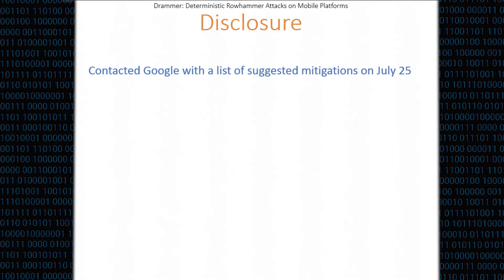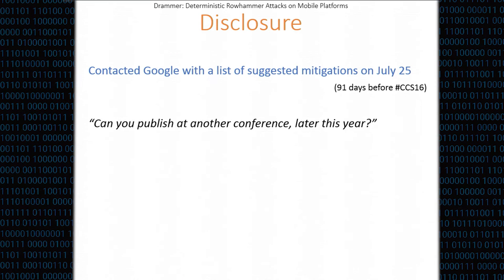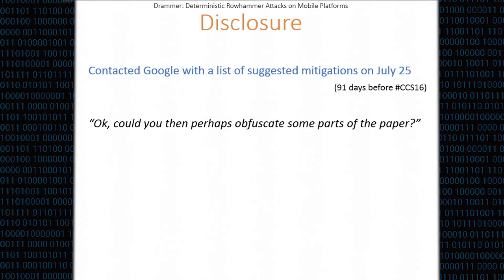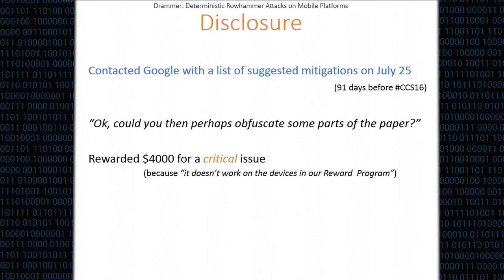We had some disclosure. We contacted Google with a list of suggested mitigations on July 25th — 91 days before CCS. We had a video call with them, and they asked whether we could withdraw from CCS and submit to another conference later. Well, no. They asked: what if we support you financially? No. Could you obfuscate some part of the paper to make it harder for people to reproduce the technique? That's also not going to happen. In the end, we were rewarded $4,000 for the critical issue, but we didn't get the extra $10K you are supposed to get for a root exploit because it doesn't work on the devices in the reward program.